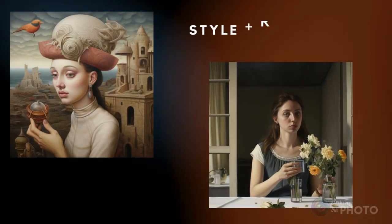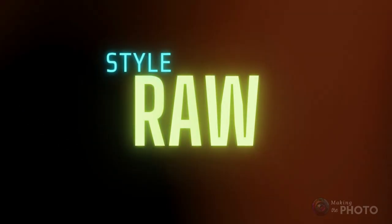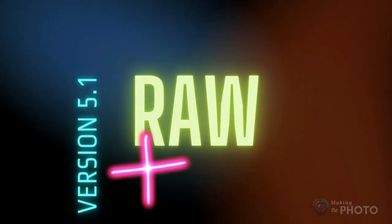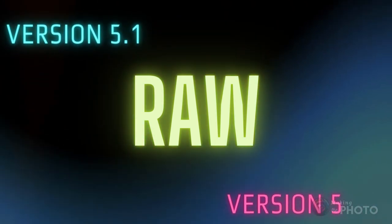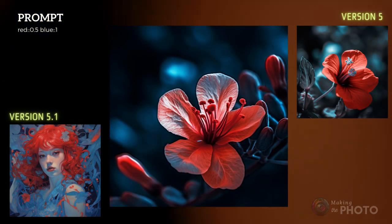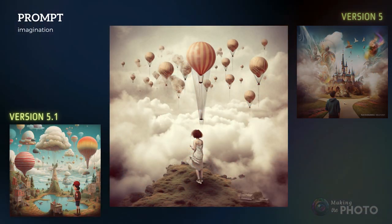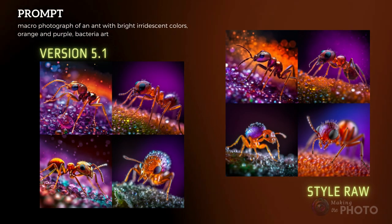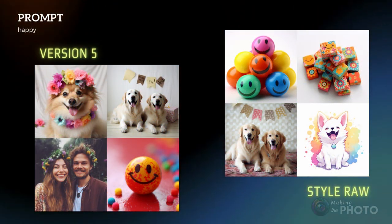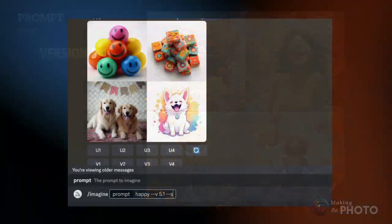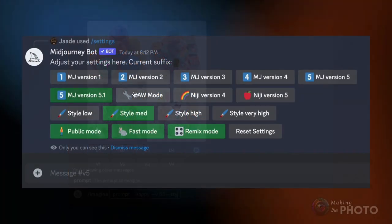If you're a fan of version 5.1 who misses the realism of version 5, there's a third way: style raw. Style raw, or raw mode, only works with version 5.1. It's a kind of middle ground between the two, but raw mode is on a slider — sometimes leaning more towards version 5, other times towards version 5.1, depending on your prompt. With detailed prompts you might not spot a difference, but with very basic prompts, raw mode tends to swing towards version 5. To use style raw, type --style raw after your prompt, or choose raw mode in the settings panel.